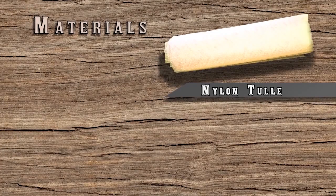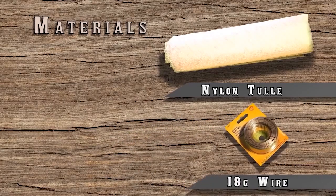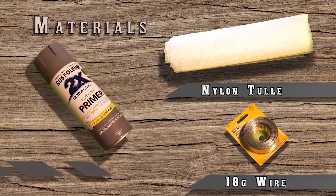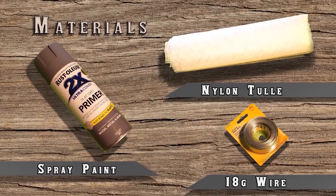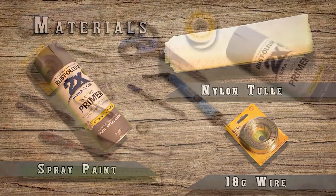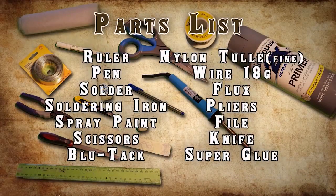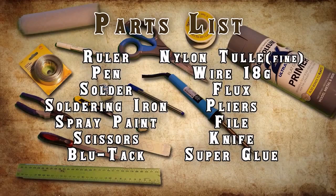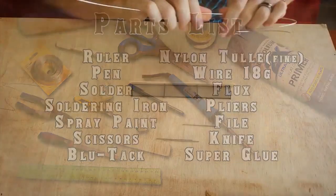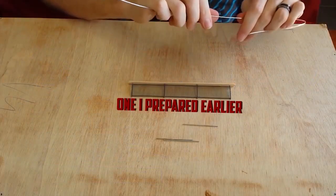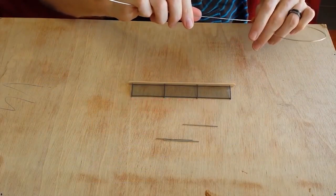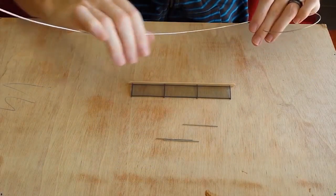So I use nylon tulle which is available from most fabric stores and you want to find the one that has the smallest holes. It's similar to the netting they use for wedding veils. I use 18 gauge wire for the frame of the fence and finally to weather it I give it a light coat of spray paint. Here is a complete list of the tools and materials I used.